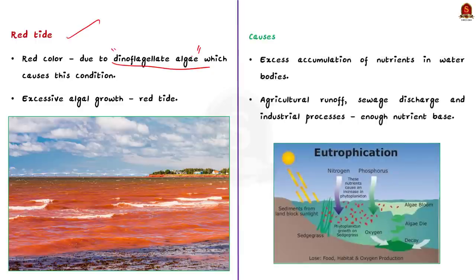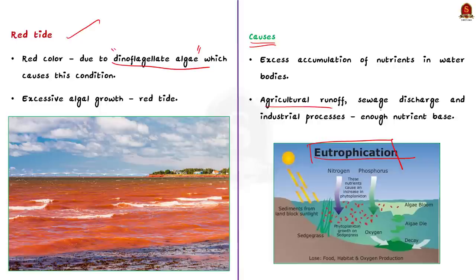So what causes red tide? Basically it is caused by excess accumulation of nutrients in water bodies. This excess nutrient leads to explosive algal growth. This process of nutrient enrichment in water bodies is called eutrophication. Excess nutrients from sources like agricultural runoff, sewage discharge and industrial processes provide enough nutrient base for the rapid growth of harmful algae. So eutrophication is the major cause of algal bloom.